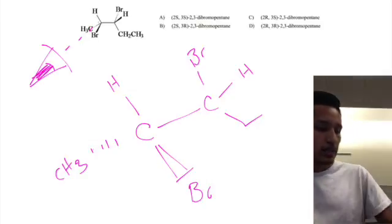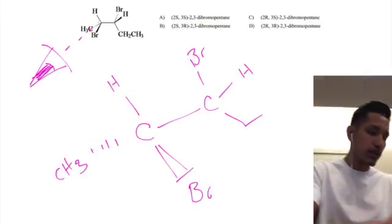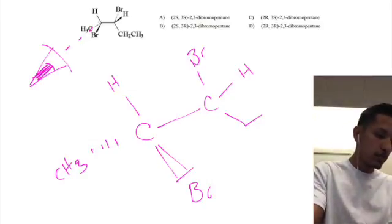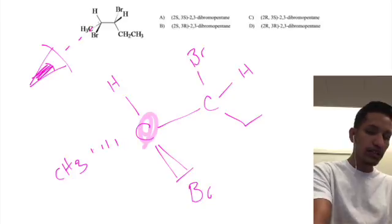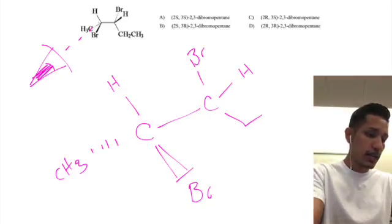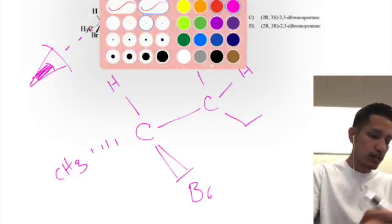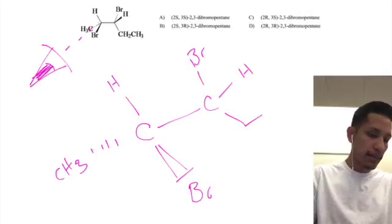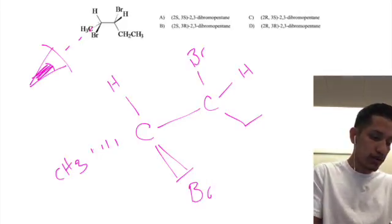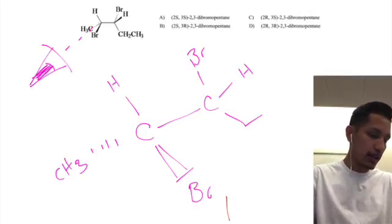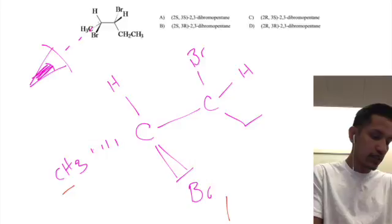So now we're going to want to determine whether this is R or S, and the first thing we need to do in order to do that is we're going to have to prioritize. Our bromine goes first, and then next we have to choose between this carbon or this carbon.